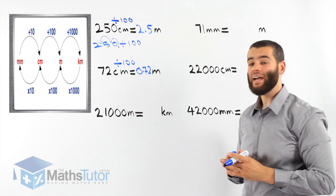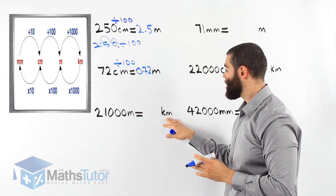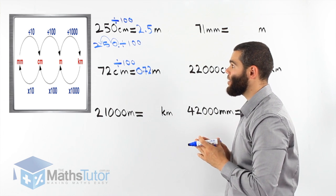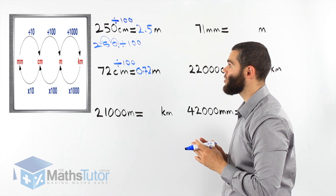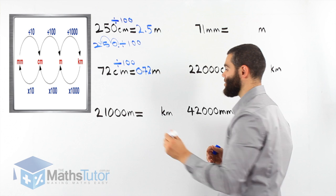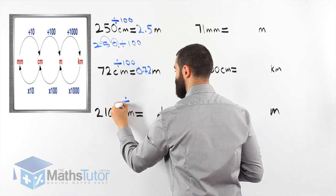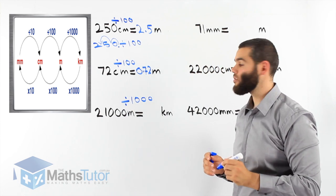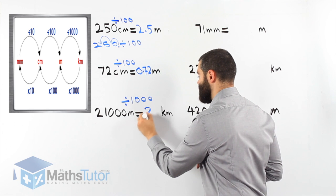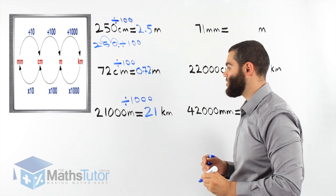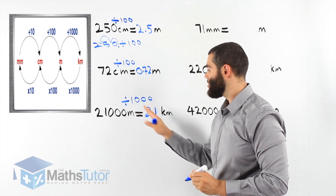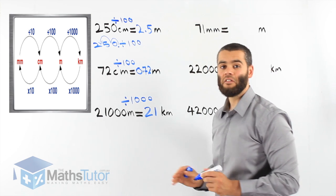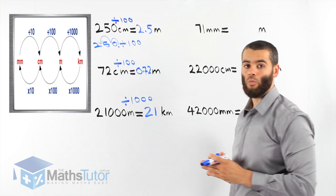21,000 metres — we're going to convert to kilometres. We look at the diagram and notice from metres to kilometres we divide by 1,000. 21,000 divided by 1,000 is 21 kilometres. So 21,000 metres is exactly the same as 21 kilometres.